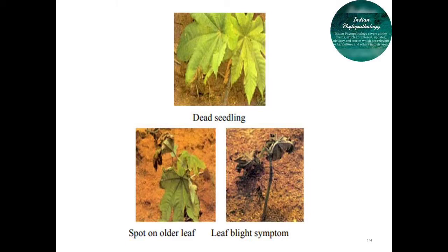In mature plants, the infection initially appears on the young leaves and spreads to the petiole and stem, causing black discoloration and severe defoliation. These are some of the symptoms of this Phytophthora blight.